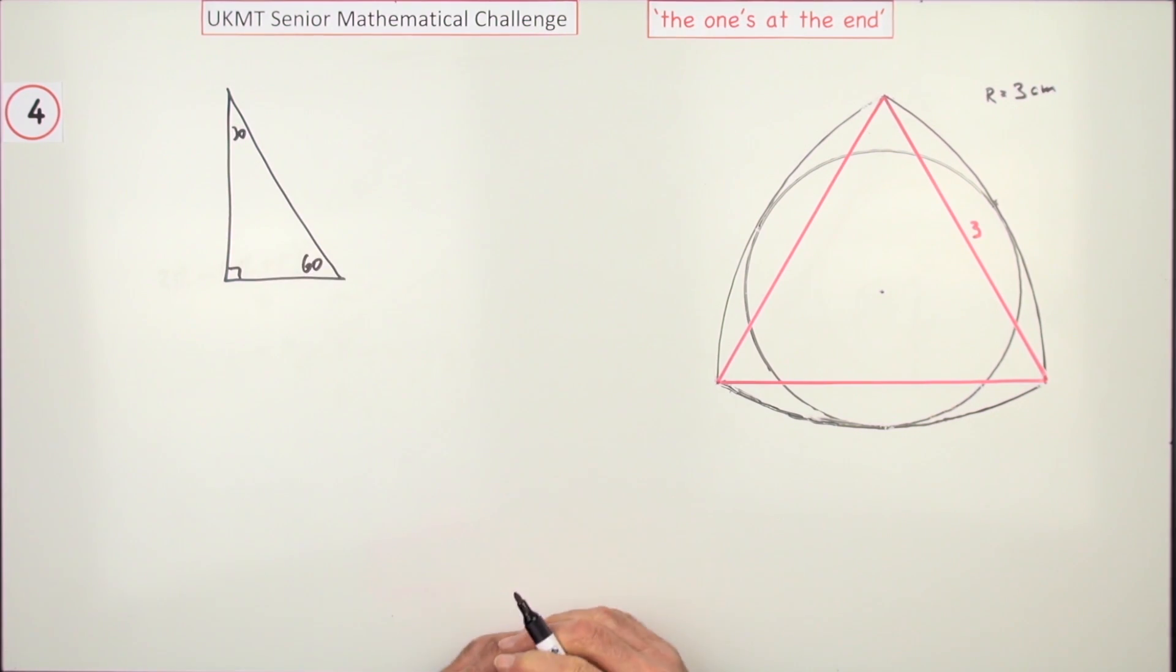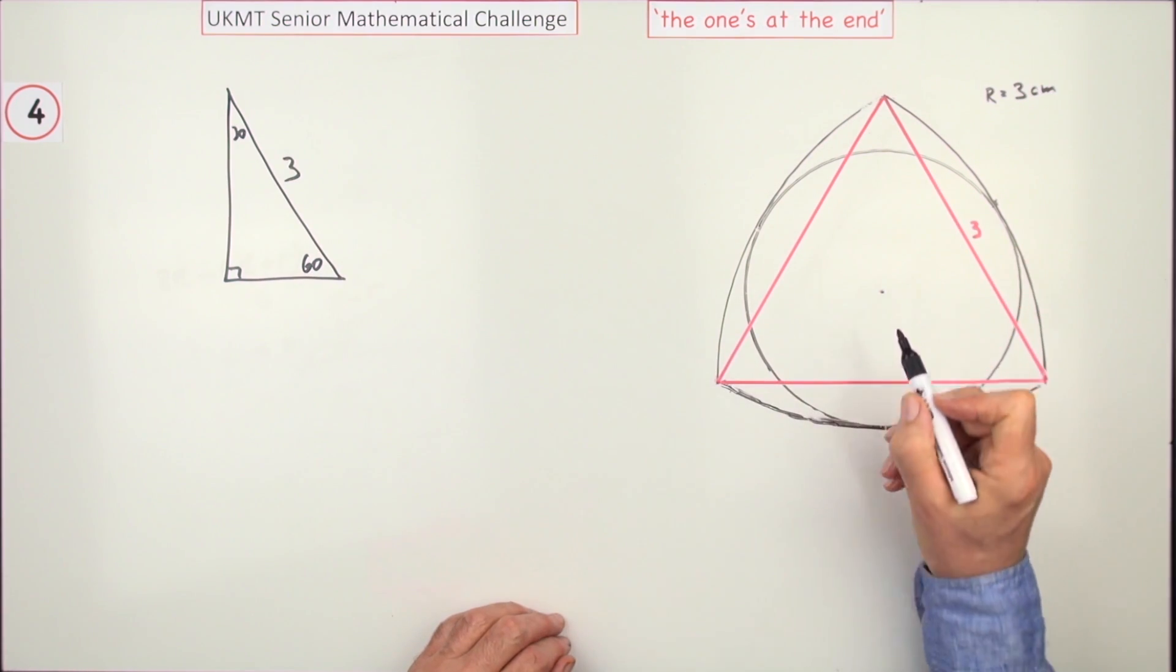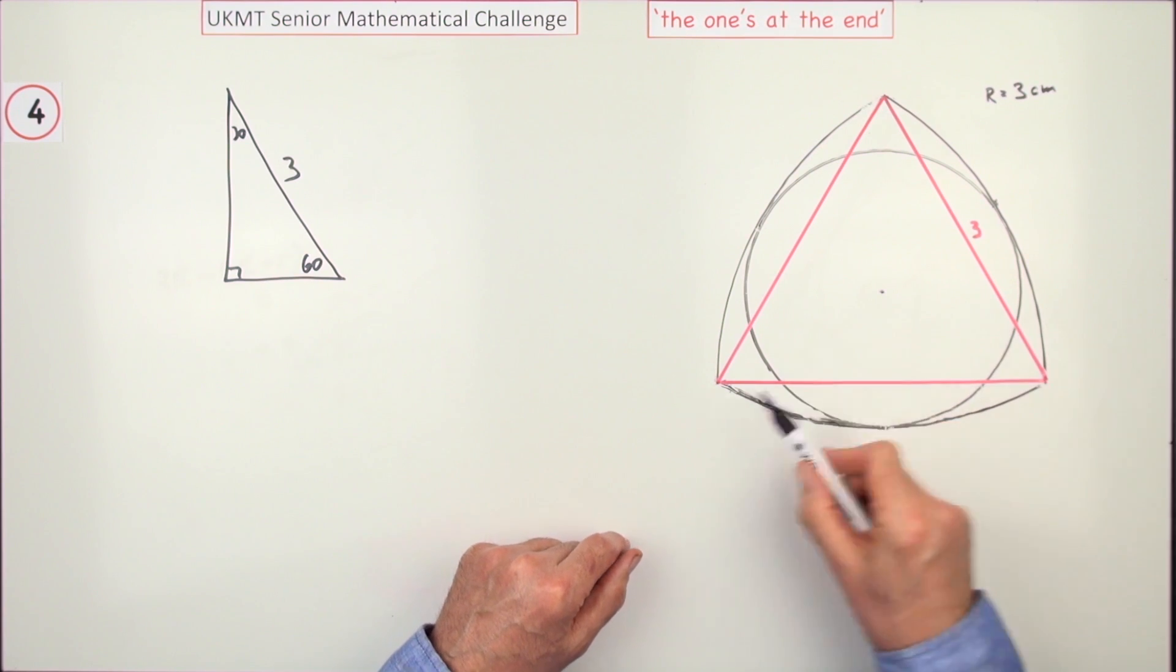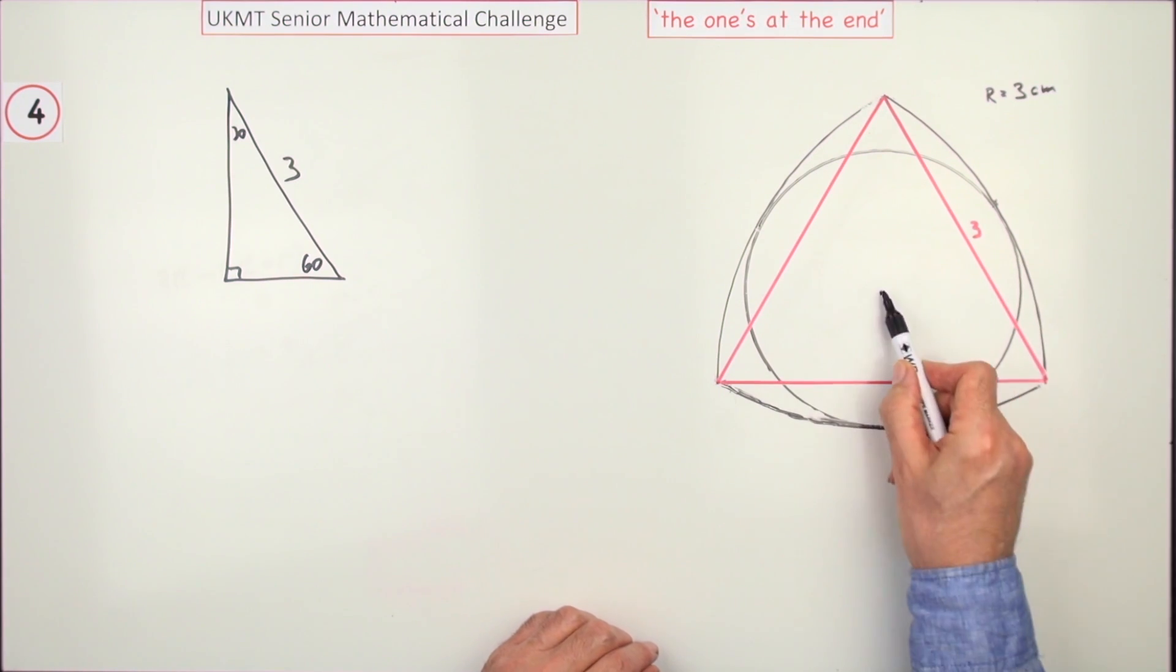60 degrees here, that side's going to be three. But the problem here is where is the center? That's where one of the techniques would be to know that this point here, the center of symmetry of this shape, must lie on the intersection of the three medians.